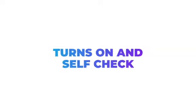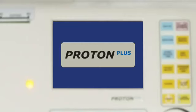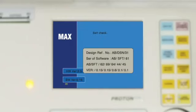Turn on and self-check: As the main unit is switched on, the system self checks itself and alerts in case of any faults. This ensures smooth and accurate functioning of the ventilator.